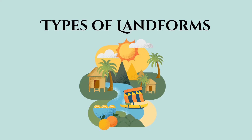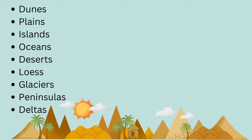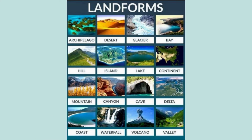Types of landforms. There are many types of landforms on Earth's surface. Some of the common types include mountains, plateaus, rivers, hills, deserts, dunes, plains, islands, oceans, glaciers, peninsulas, deltas, archipelagos, coasts, waterfalls, bays, and more.